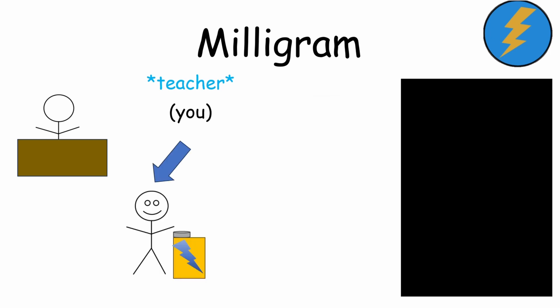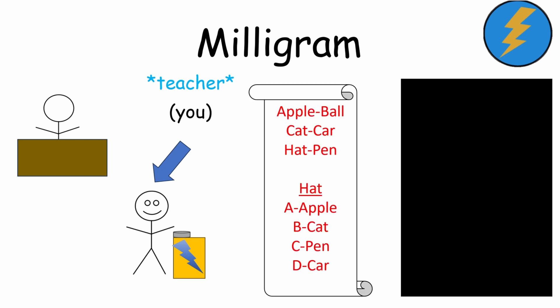The experiment starts, and you read off the first word of each pair, and you ask the learner to choose the correct second word from four options. First pair, correct. Second pair, correct. Third, wrong. You reluctantly press the first shock button, 15 volts. The machine says, slight shock.